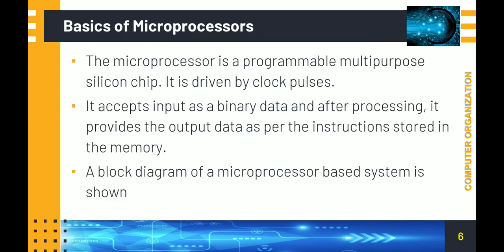A microprocessor is a programmable, multipurpose silicon chip. It is an integrated circuit representing the fourth generation of computers. It is driven by a clock pulse. Binary data — 0s and 1s — is input to the microprocessor, where 0 is the off state and 1 is the on state. It accepts binary input, processes it, and provides output data as per the instructions stored in memory.